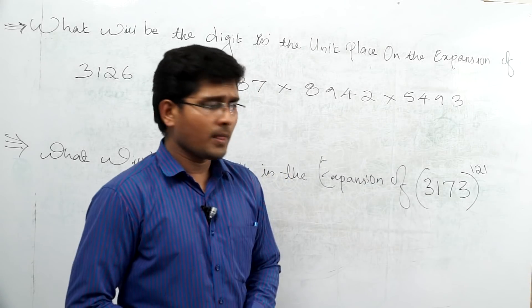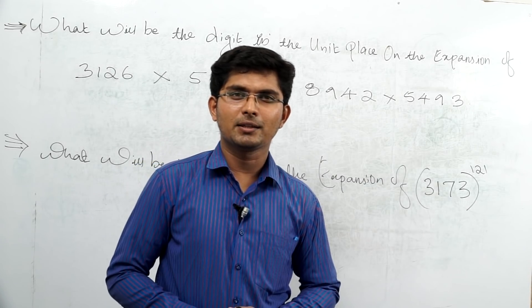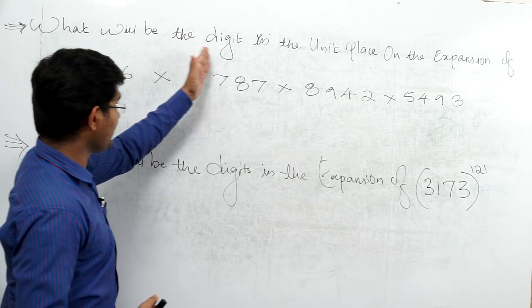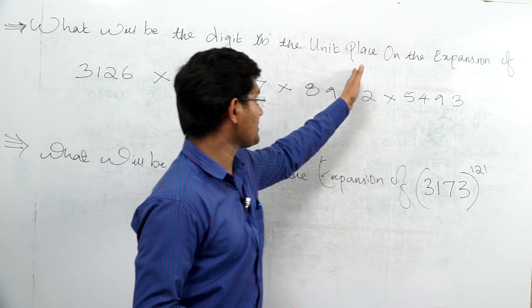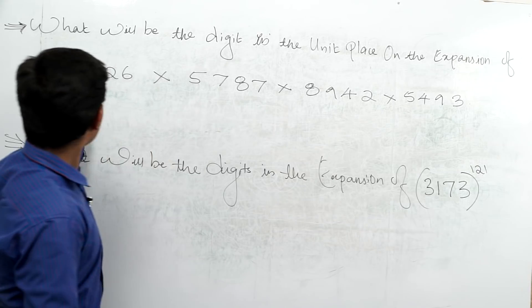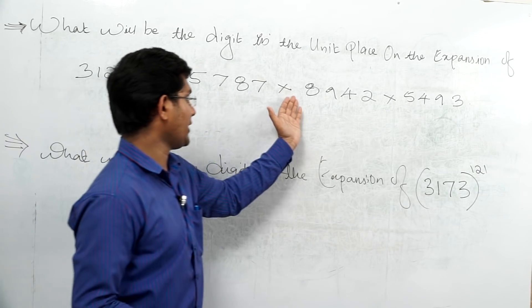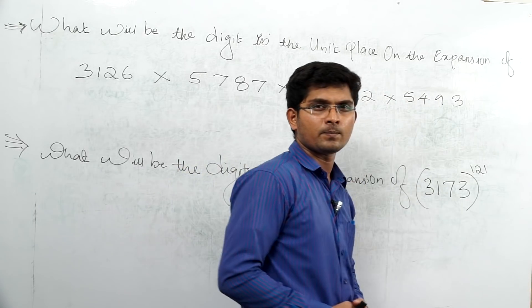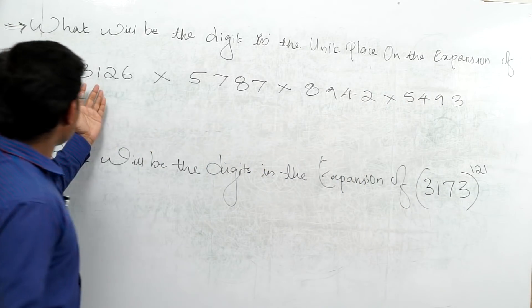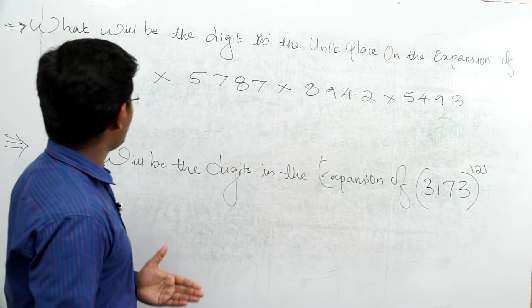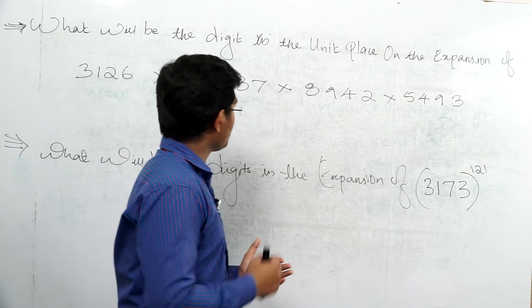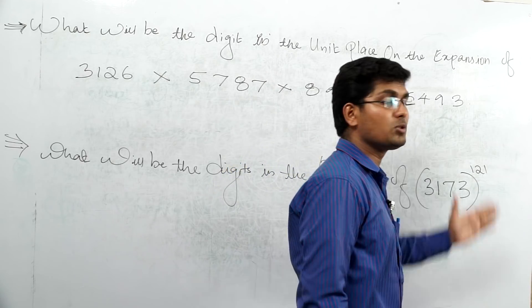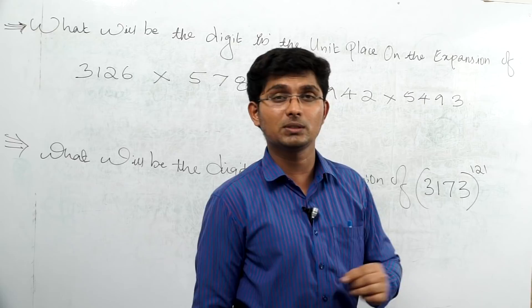Hi friends, what will be the digit in the unit place on the expansion of 3126 × 5787 × 8942 × 5493?